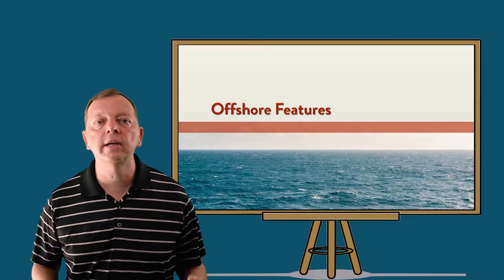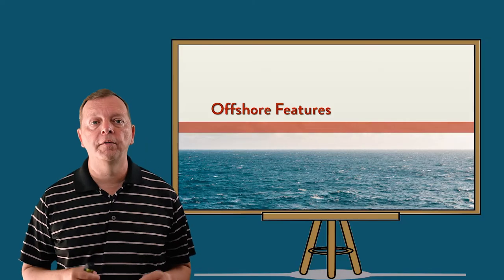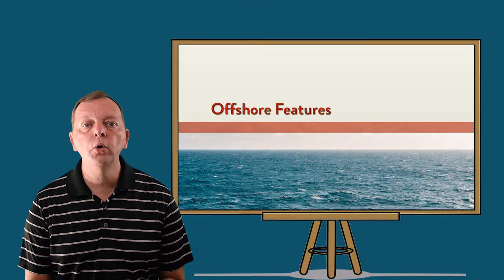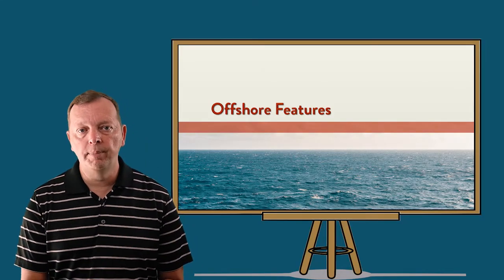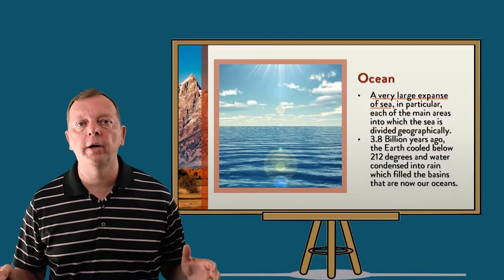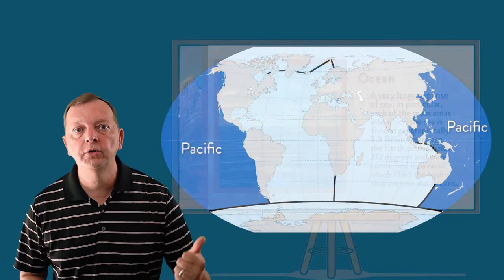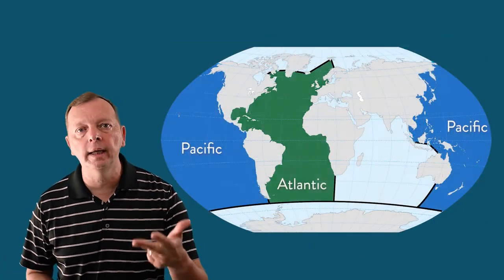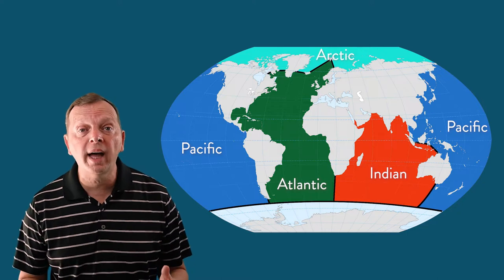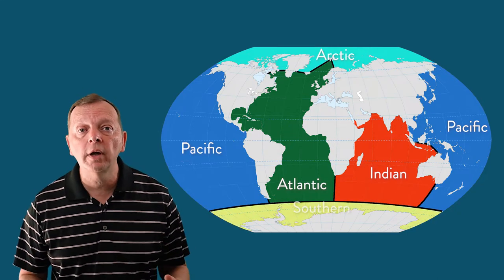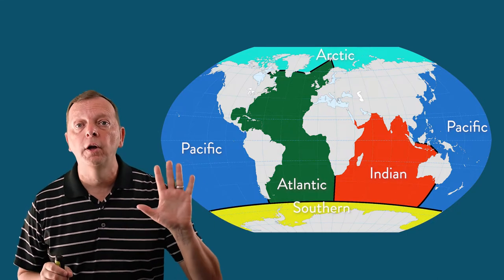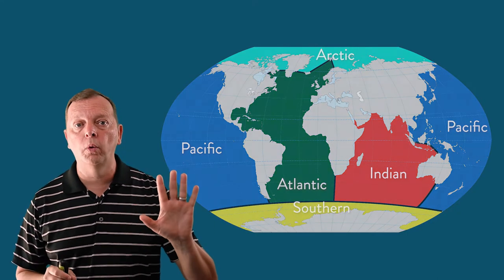Speaking of the seas, let's talk about them for a few moments. First of all, there are oceans, seas, gulfs, and bays. Oceans are the largest bodies of water — the Pacific, the Atlantic, the Indian, and the Arctic are all oceans. And in 2000, the Southern Ocean was named as the fifth ocean of the world.